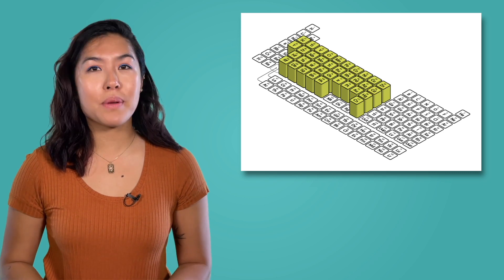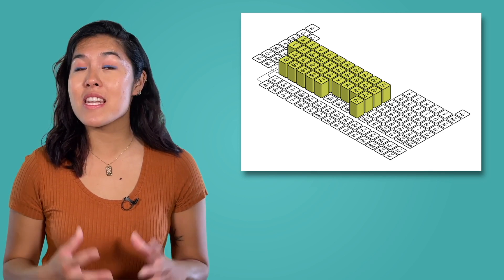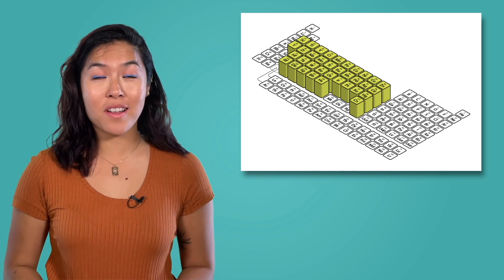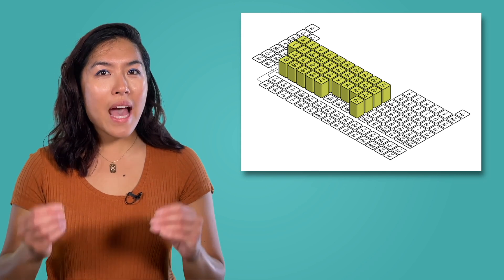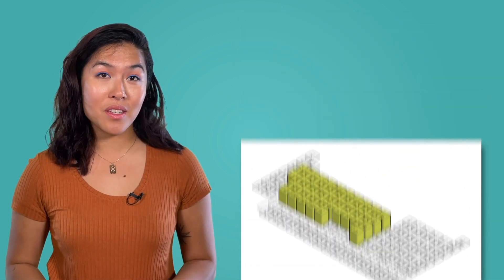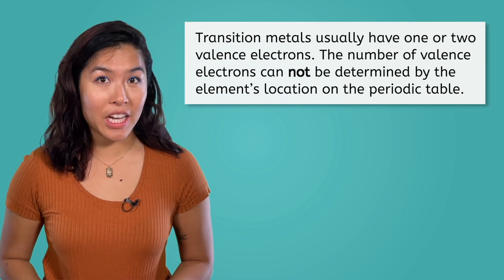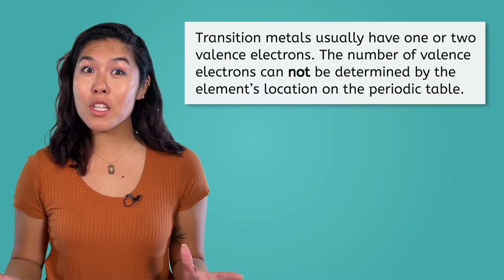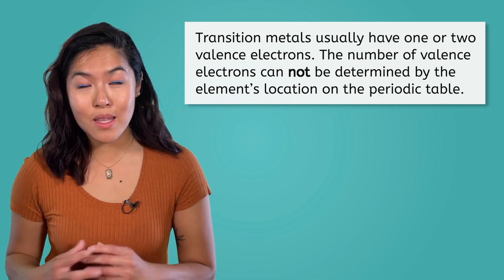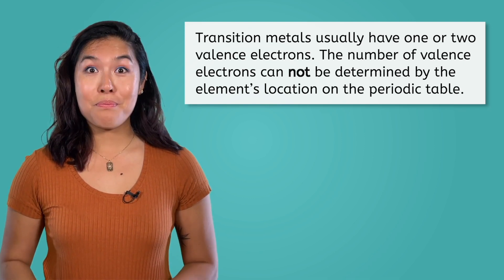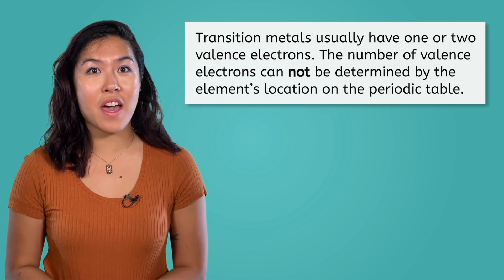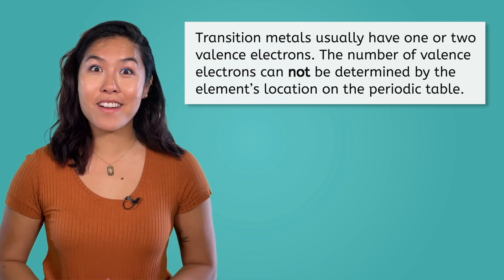When we learned how to use the periodic table to determine the number of valence electrons an element has, we actually skipped these metals. Transition metals usually have one or two valence electrons, but it is impossible to know the exact number based on only the periodic table. Because of this, we didn't focus on them when learning about ionic compounds.